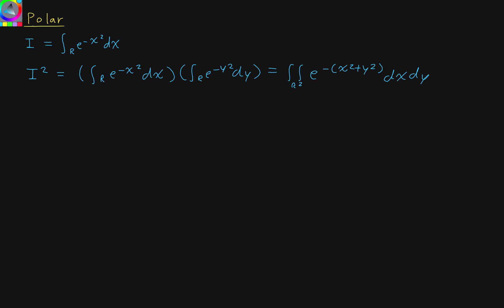Now, if we want to change this to polar coordinates with r and theta, we have to consider what dx dy — the area element — changes into. You could do this using the Jacobian, but I'm going to do it in a more intuitive, geometric way. We have dx dy, which is just a small area element. We want to change it to a polar area element. We have a very small change in the radius, so that's dr. And for the other length, it's not just a change in angle — we need the arc length itself, which is r dθ. Multiplying these gives the area element: r dr dθ.